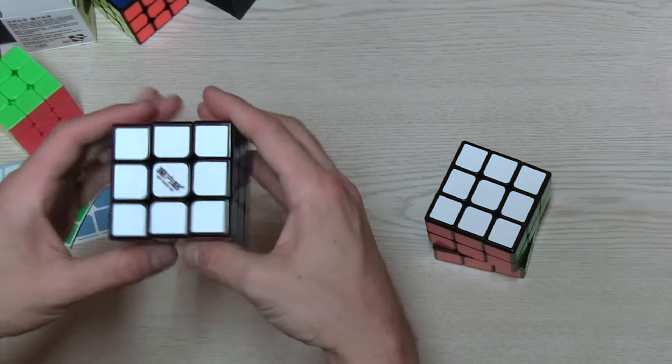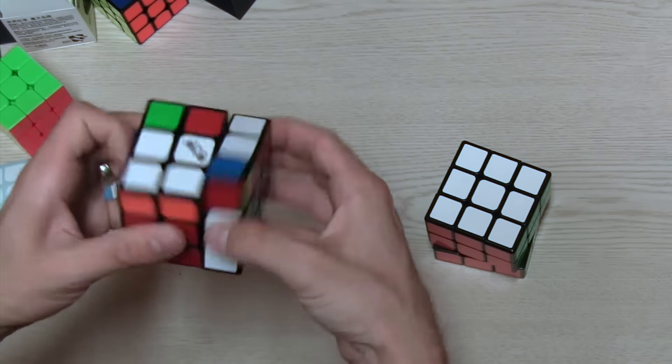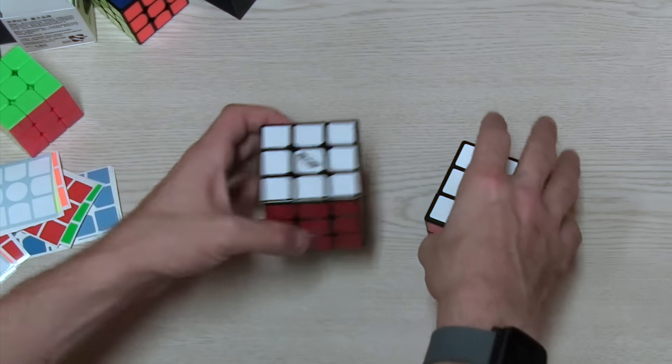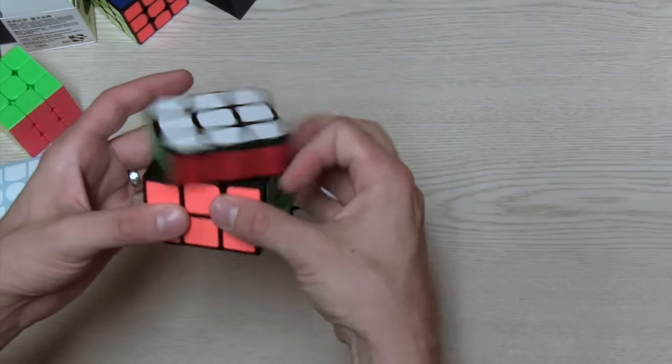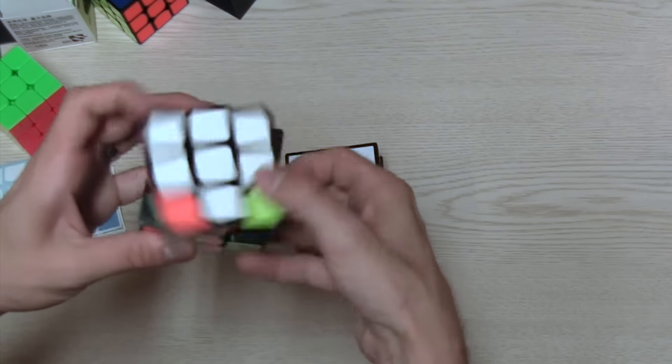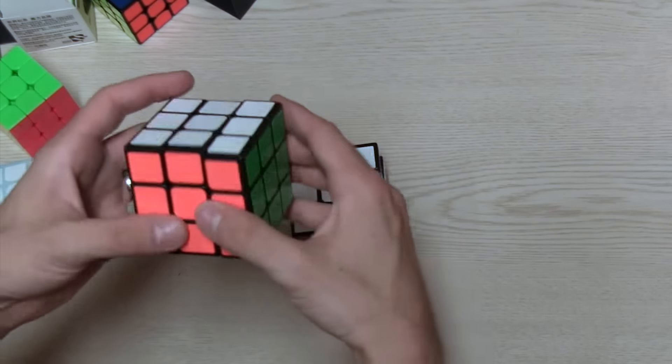So we've got the Qiyi Sail, the larger version of that, and this is 6.8 centimeters. And then we have the Shang-Shu, and I believe this is based off the Legend. And this is 70 millimeters.